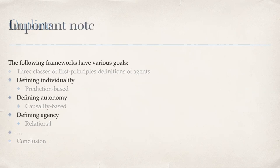An important point is that some of these theories are not strictly speaking about agents or agency. Some are presented as theories of autonomy, adaptation, or individuality. My claim is that even if they were not initially intended as theories of agency, they have something to say about it, and we'll try to reinterpret them in terms of the questions we've been asking this week.